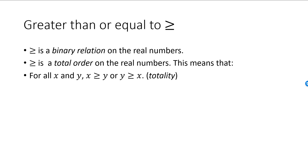It is simply impossible to come up with two real numbers such that both of these are false. The binary relation greater than fails this condition, which we can see if we pick x and y to be the same number. The next condition is called reflexivity. Greater than or equal to is reflexive since x is always greater than or equal to itself.